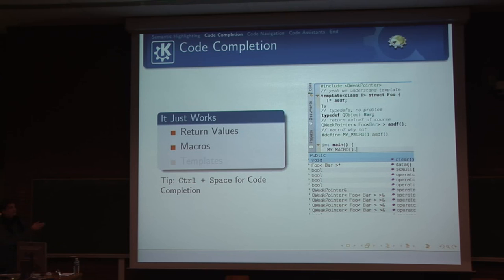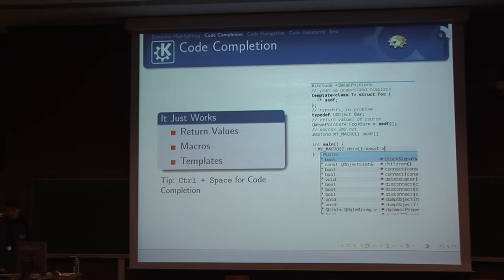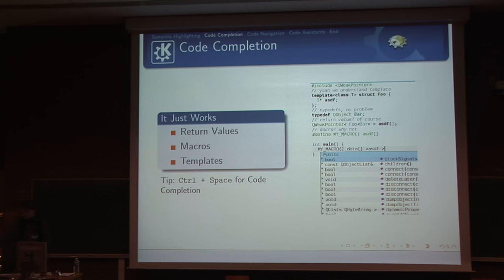For us, using a macro is the same as writing ASDF and calling that function directly. We also understand template code — QWeakPointer is a pointer of a Foo class with a Bar in there, and Bar is just a typedef to QObject. We understand all that and show you the correct code completion. This is really neat and helps you write code very fast.